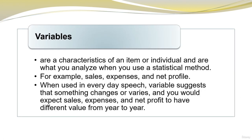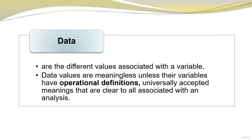Variables are characteristics of an item or individual and are what you analyze when you use a statistical method. For example: sales, expenses, and net profit. The term variable suggests that something changes or varies, and you would expect sales, expenses, and net profit to have different values from year to year. Data are the different values associated with a variable. Data values are meaningless unless their variables have operational definitions — universally accepted meanings that are clear to all associated with an analysis.